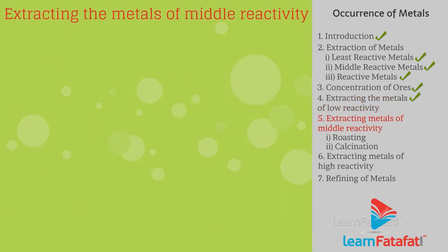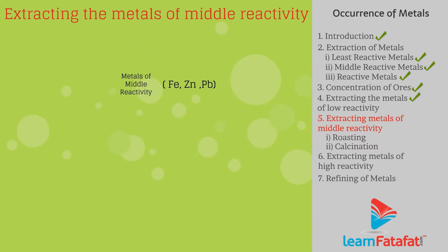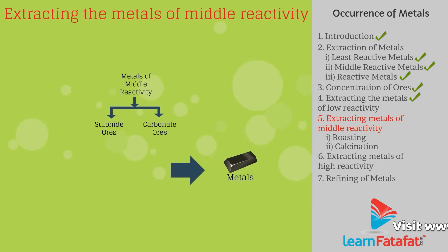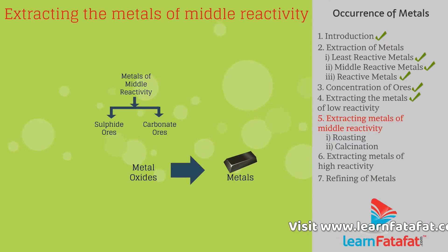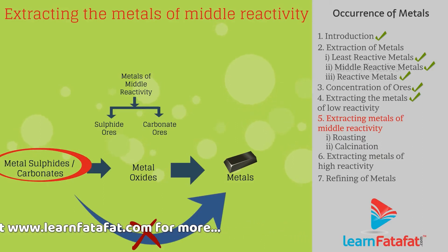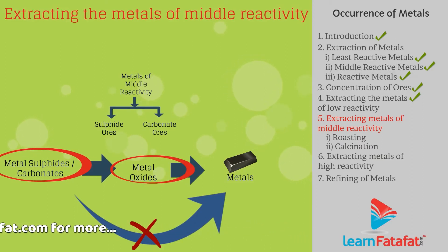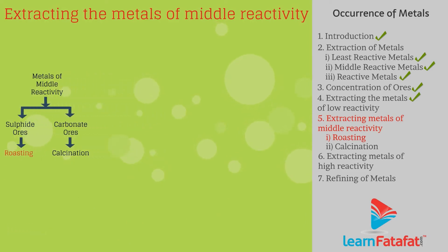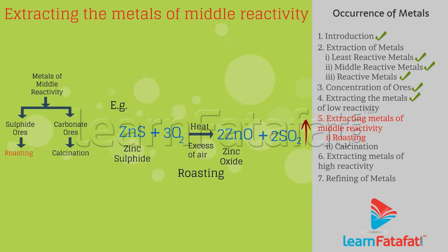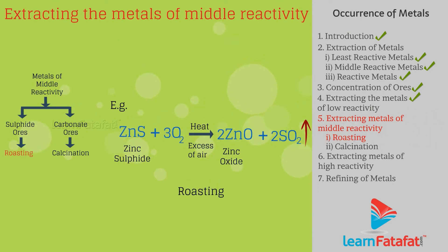Extracting the metals of middle reactivity. The metals with medium reactivity such as iron, zinc, lead, and copper occur as sulfides or carbonates. It is easier to obtain a metal from its metal oxide than from metal sulfides or metal carbonates. Hence, we convert metal sulfides or metal carbonates to metal oxides. The sulfide ore is heated strongly in excess of air to get metal oxide. This process is called roasting.